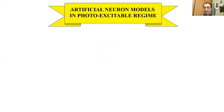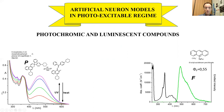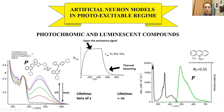Examples of artificial neural models in the phasic excitable regime are photochromic and luminescent compounds. They respond to an excitatory signal by becoming colored or by emitting light, respectively. When they receive a stationary excitatory signal, they relax to the original state after discontinuing the excitation. The recovery of the initial state requires tens of seconds for thermally reversible photochromic compounds, whereas it requires a few nanoseconds for luminescent compounds.